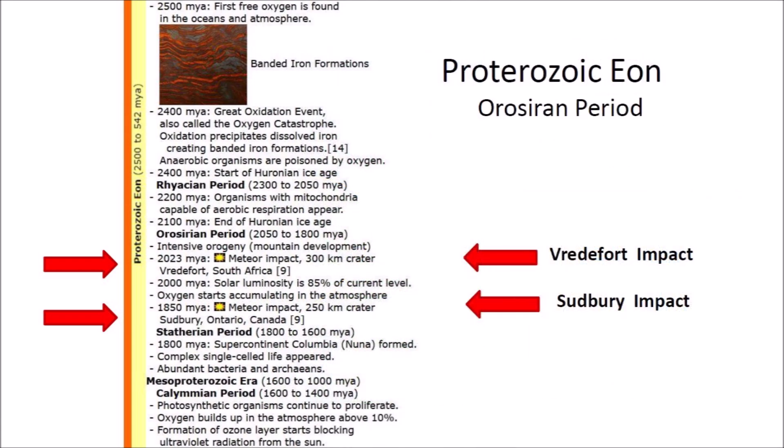The Vredefort and Sudbury impacts occurred during the Orosirian period of the Proterozoic Eon. The name Proterozoic is derived from the Greek proteros, meaning earlier, and zoe, meaning life. The Proterozoic Eon covers the time from the appearance of oxygen in Earth's atmosphere to just before the proliferation of complex multicellular life. These huge impacts happened at a time when the Earth was populated only by single-celled organisms.